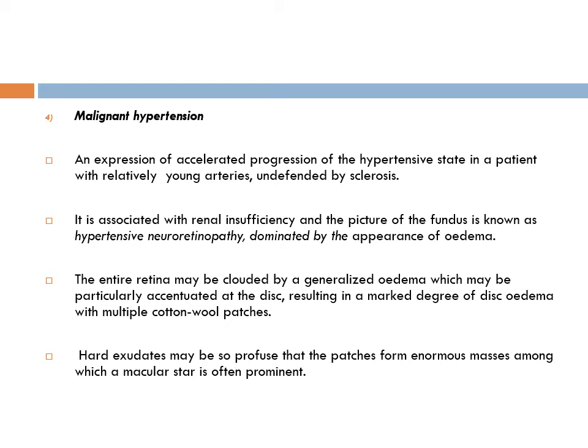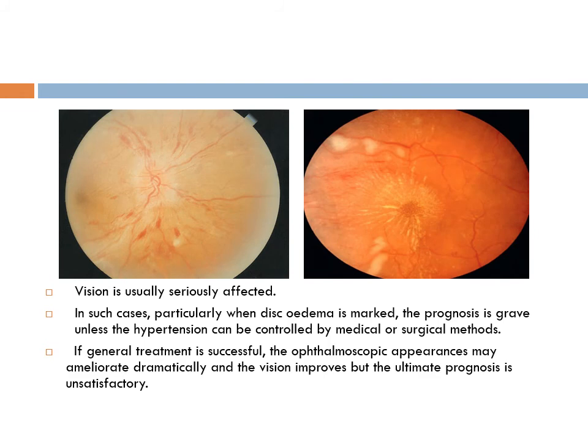This category has the worst prognosis — life expectancy is very limited, and there is associated severe renal insufficiency. Young arterioles subjected to blood pressure 220/130 develop ischemic changes causing breakdown of the blood-retinal barrier. The fundus is dominated by retinal edema, disc edema, cotton wool spots, and hard exudates. Vision is seriously affected due to macular edema.